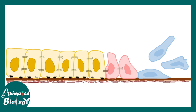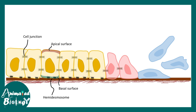EMT is a precisely regulated molecular process. Any epithelial cell would be attached to each other with specific cell junctions — it could be adherens junctions, tight junctions, etc. It would also be attached to a basement membrane with the help of hemidesmosomes. Epithelial cells have a typical apico-basal polarity, meaning one apical side and one basal side, which are molecularly distinct.